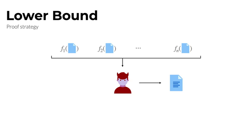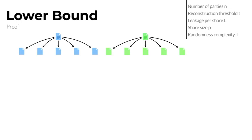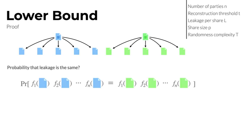More concretely, the leakage functions we use are simply uniformly random functions — they take a share as input and produce a uniformly random value. To understand how the lower bound proof works, consider two arbitrary but fixed secrets: a blue secret and a green secret, with corresponding blue and green secret sharings. The first question is: with what probability will applying the leakage functions to the blue secret sharing and the green secret sharing produce the same vector of leakages?